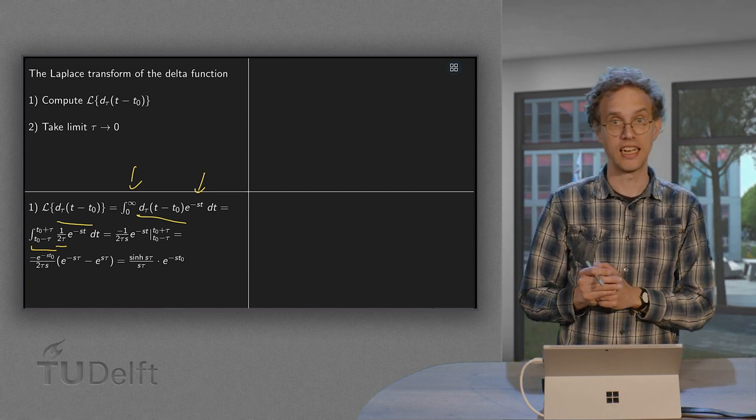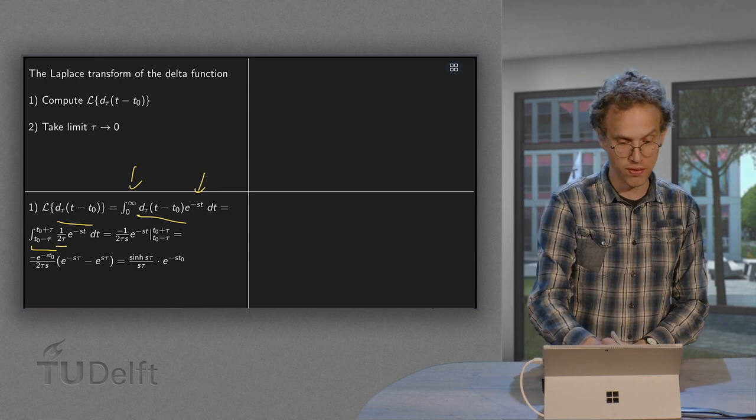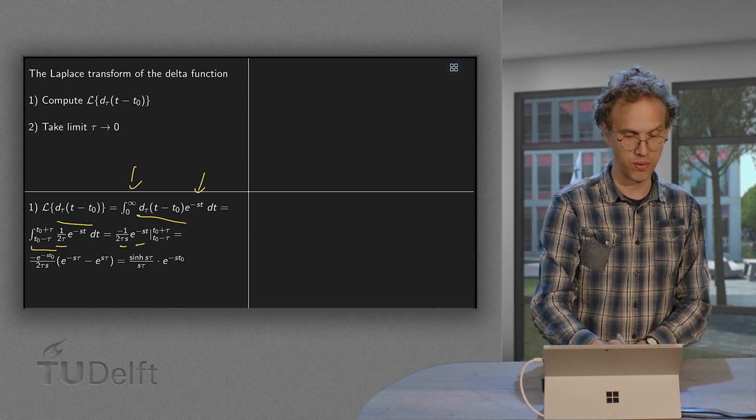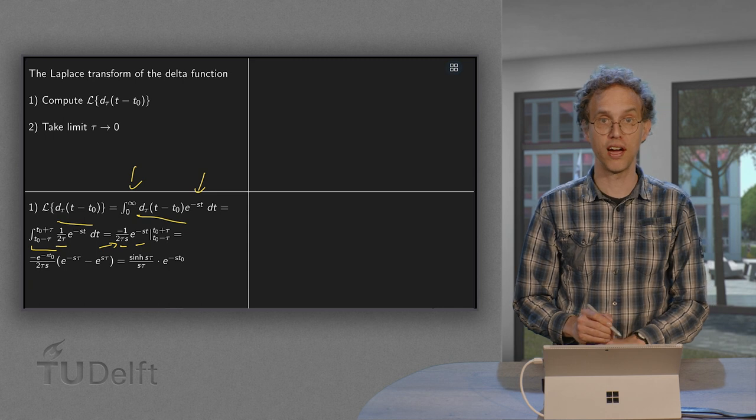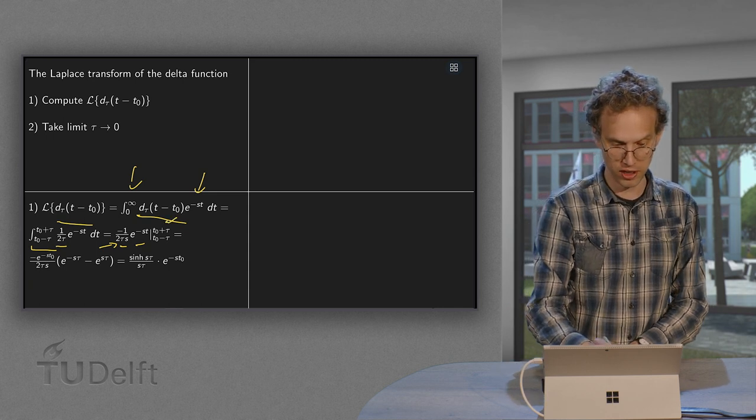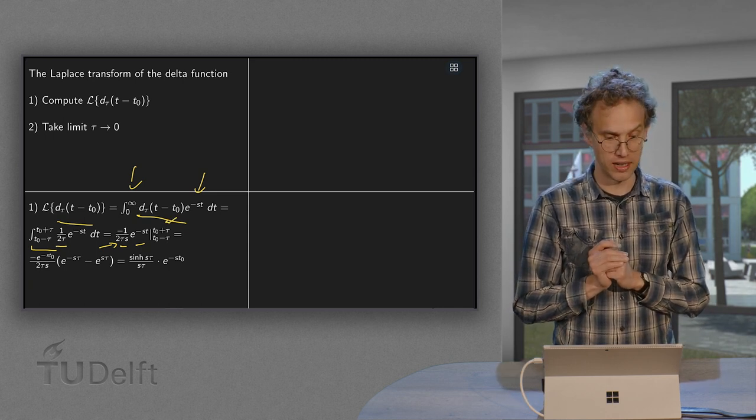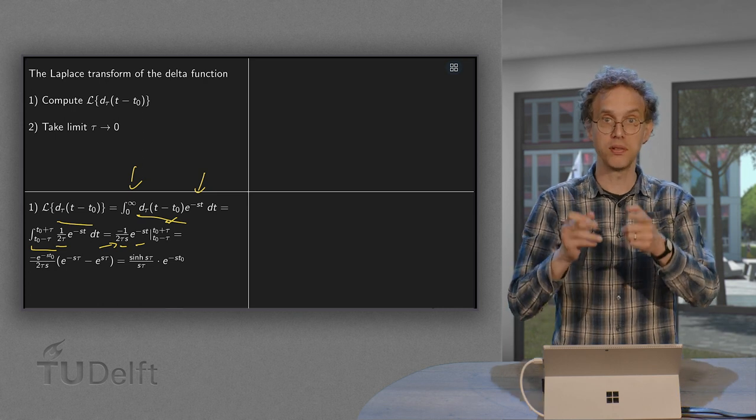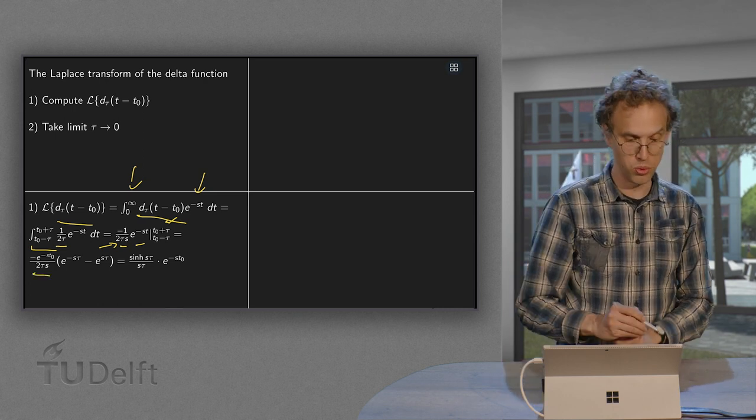So that gives us, as an antiderivative, a minus one over s times this exponential. And a one over 2τ just survives between the boundaries. Now we plug in the boundaries. We keep the minus one over 2τs.